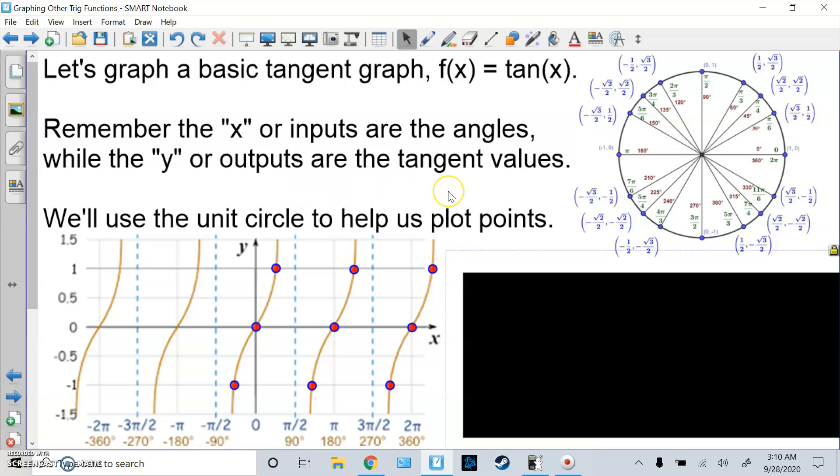So first, remember tangent is y over x, so tangent of 0 degrees or 0 radians will be 0 by 1, which is 0. That's why at 0 for the angle, I'll put 0 for the value. So I go up to pi over 4 or 45 degrees, root 2 over 2 divided by root 2 over 2, same thing by itself, this is positive 1. If I keep going, I keep going up.